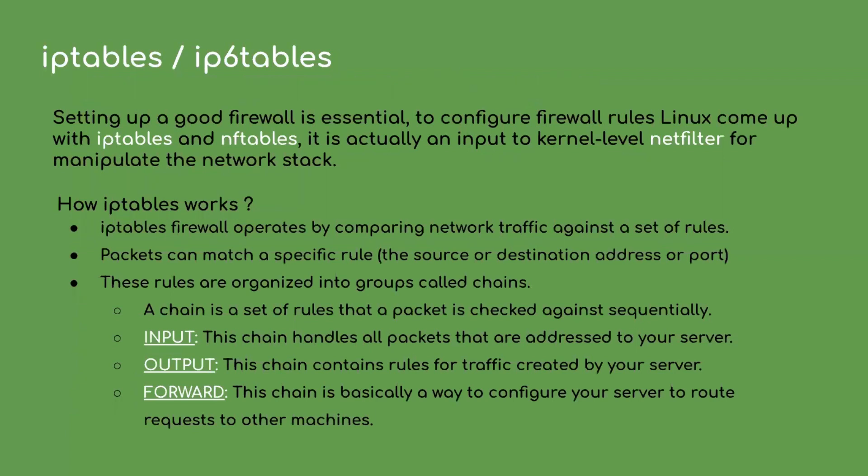Now let us start with how Docker achieves network isolation. To understand Docker network isolation, we first need to get some knowledge on IPtables. IPtables is a standard firewall included in most Linux distributions by default. Setting up a good firewall is an essential step for any operating system; otherwise, hackers can hit your containers if those are exposed to the public without any reason, corrupting your system through injections and increasing the load on the system. So firewalls are very important for systems that are open to the public.